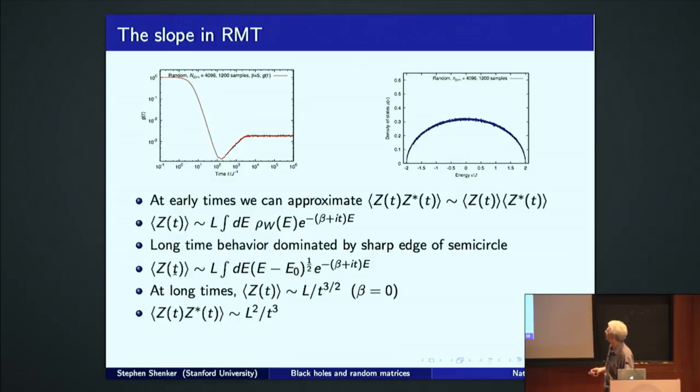And it defines a timescale that we're interested in, inverse to that, a timescale of order L. So that's a timescale exponential in N, exponential in entropy. So the timescale that lets you probe the smallest eigenvalue spacing. Well, now we can ask about this early part, the slope. Well, very early time, you can compute ZZ star, you can ignore the, this is averaged over M. You can ignore the correlations here and approximate it by the factorized correlation function.